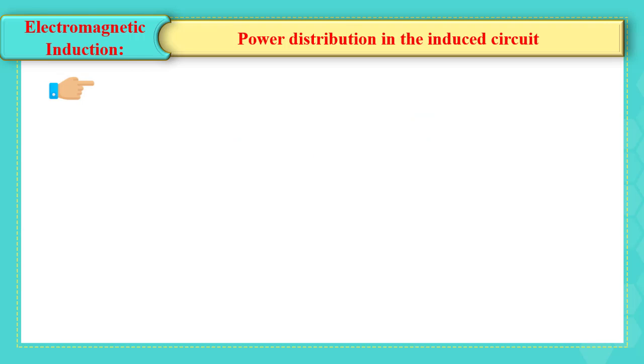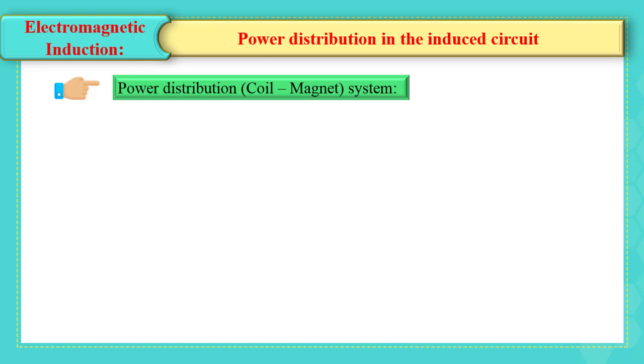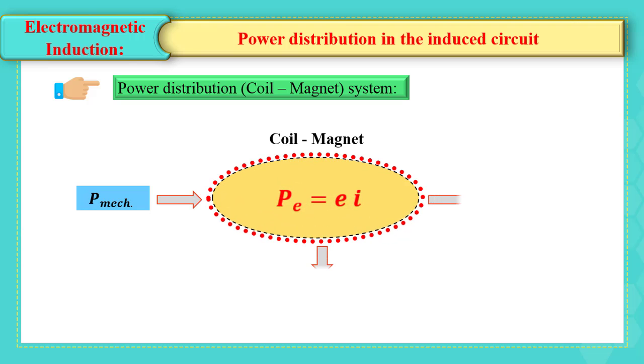Power distribution of coil magnet system. We can consider the coil magnet system as a converter of energy, where the mechanical power is converted into electric power, which is equal to E multiplied by I, and the electric power appears in the circuit as a useful power, which is equal to UAB multiplied by I.